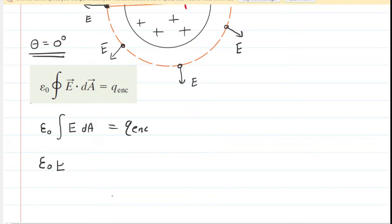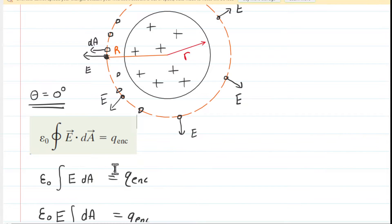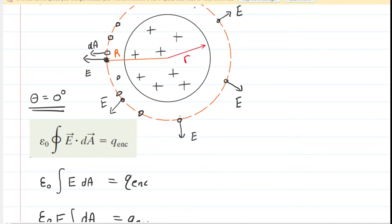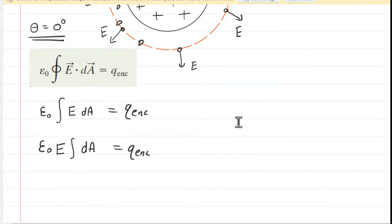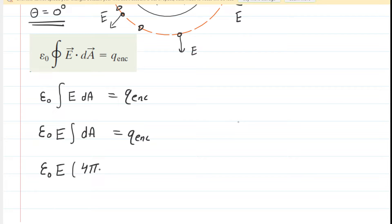Now we have the constant times the electric field magnitude and then the integral of dA. We need to evaluate that integral. Remember, we drew that little square patch element on our Gaussian sphere, and there would be these little patch elements all over the Gaussian sphere. The integral of dA tells us to sum the areas of those patch elements. Adding up all those little square patch elements gives us simply the surface area of the sphere, which is 4π times its radius squared.